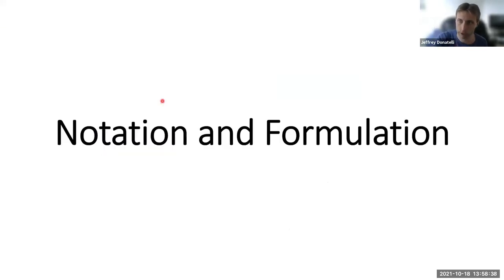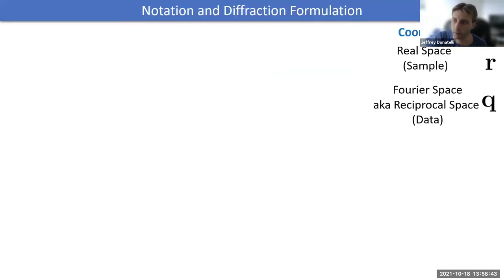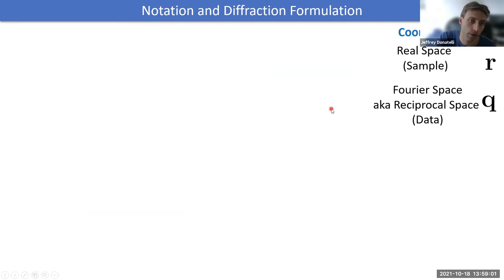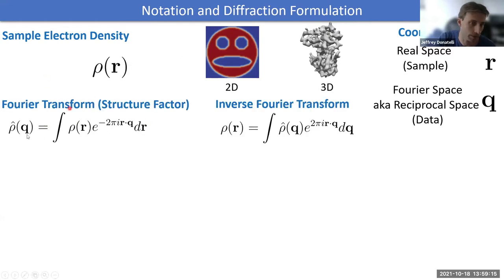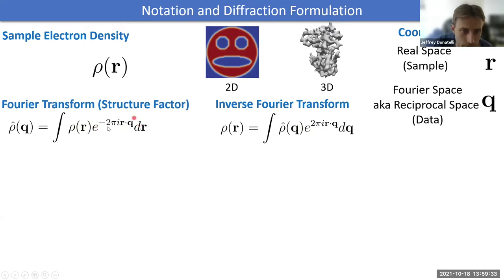Basic notation is introduced: bold R for real space coordinates where the sample lives, and bold Q for Fourier (reciprocal) space where data lives. The electron density ρ(R) is the main quantity to reconstruct, and ρ̂(Q) is its Fourier transform. Given the Fourier transform, the density is recovered via inverse Fourier transform. A slightly different convention is used with 2π in the exponential to simplify formulas, so conversions between conventions may require multiplying or dividing by 2π.